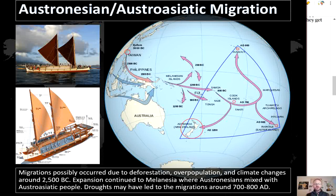The entangled bank model argues that migration goes back further than the express train model, claiming that the long history of Austronesian linguistic, cultural, and genetic interaction with indigenous Southeast Asians and Melanesians lends credence to the idea that earlier settlement patterns were started by Southeast Asians. The slow boat model is similar to the express train model but argues that the Austronesian people stayed in Melanesia much longer, intermarrying with local Austro-Asiatic people until eventually a group moved out of Polynesia much later than 900 BC. This model is supported by Y chromosome data from Kayser et al. 2000, showing all three haplotypes of the Polynesian Y chromosome can be traced back to Melanesia.